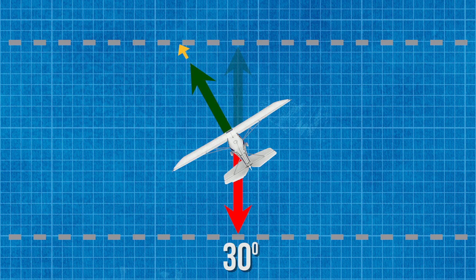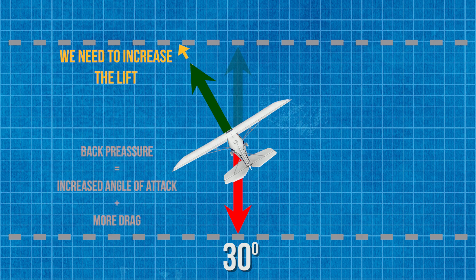So what we need to do is make up for that. The way we do that is by increasing the lift by bringing the stick back, which also affects our drag and we slow down. If we don't increase the lift and don't increase the back pressure on the stick, we will start to descend.